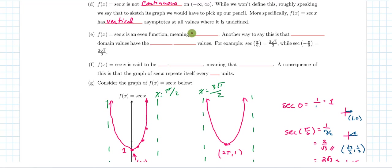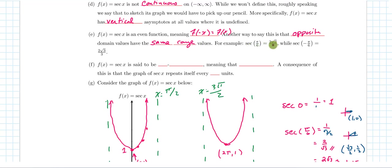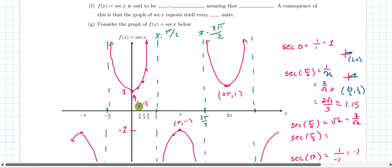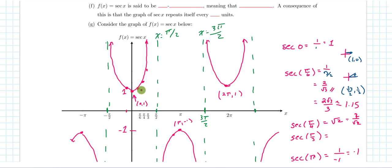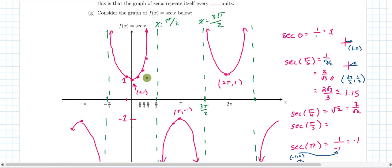The secant of x is an even function, meaning sec(−x) = sec(x) — opposite domain values produce the same range values. For example, sec(π/6) = 2√3/3, and sec(−π/6) gives the exact same value. You can see this reflected in the graph: plugging in π/6 and −π/6 gives the same y-value. If you reflect the graph about the y-axis, one side falls as a mirror image on top of the other.